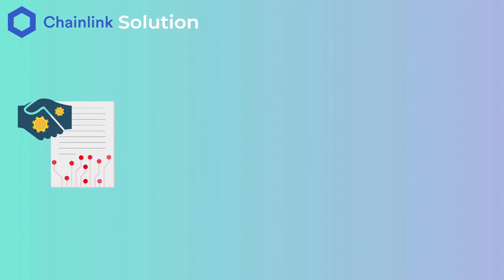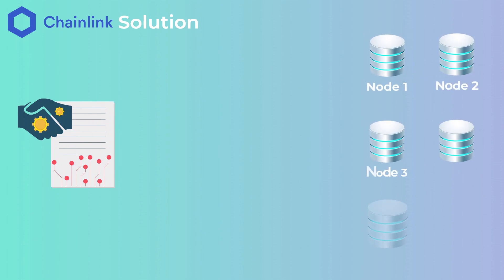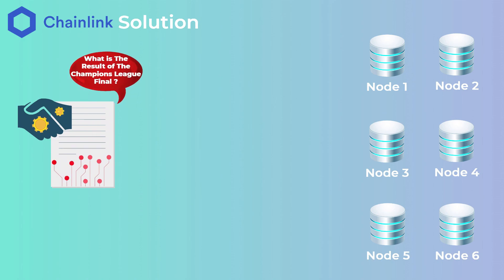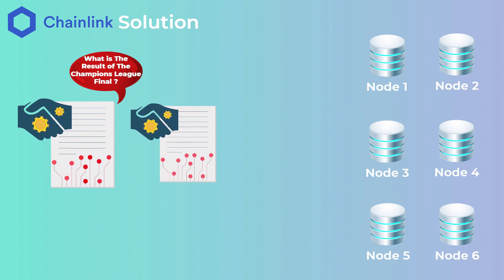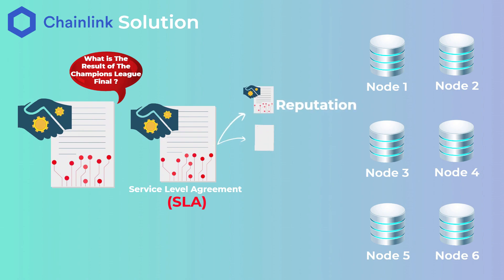Let's see how this problem is solved by Chainlink, which is the most popular oracle project right now. In Chainlink, there are many oracle nodes, not just one. When a smart contract requests data from Chainlink oracle nodes, a new smart contract called a Service Level Agreement Contract — or SLA contract — is automatically created. This SLA contract creates three new contracts: a reputation contract, an order matching contract, and an aggregation contract.